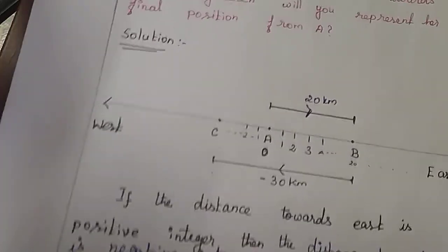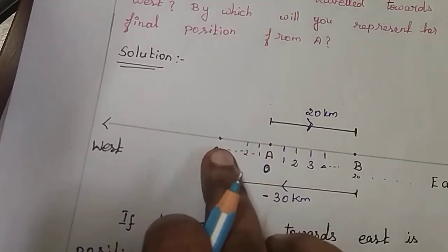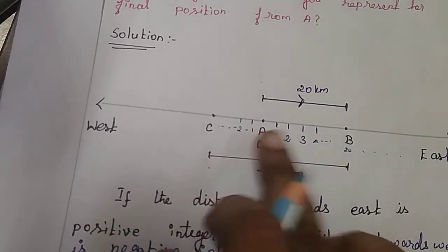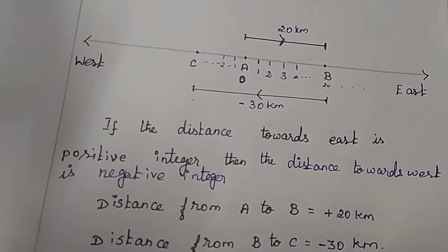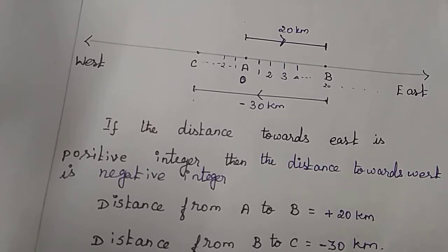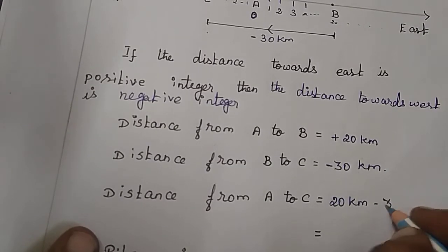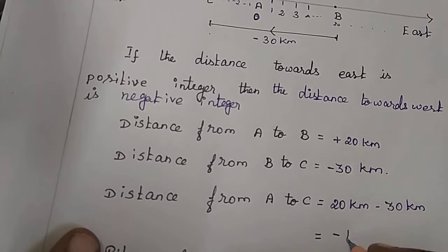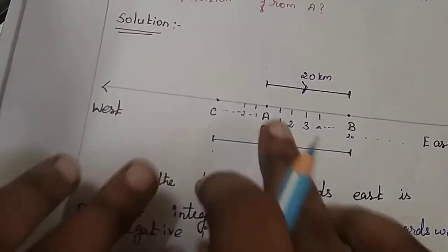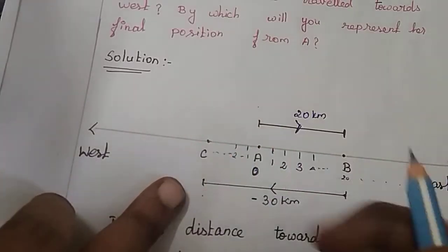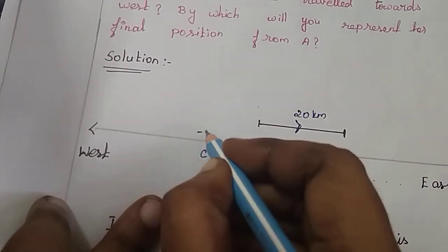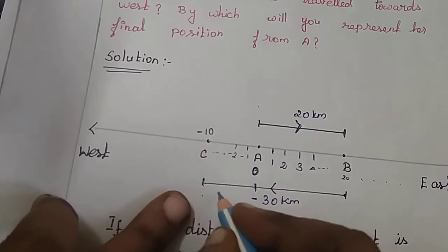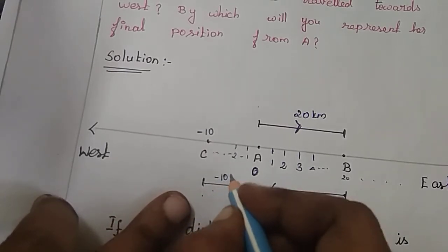Distance from A to C: A to B is plus 20 km, B to C is minus 30 km. So 20 minus 30 becomes minus 10 km. So from A to C, the distance is minus 10 km. The final position is minus 10 km from A.